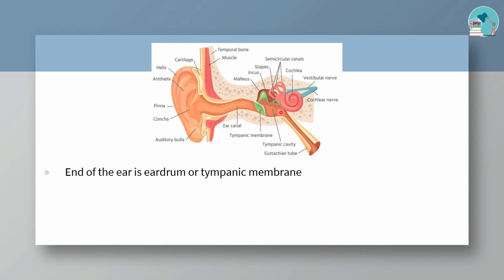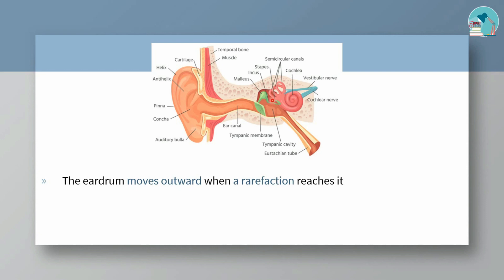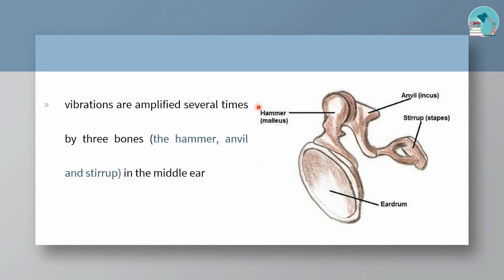If you look at the ear drum, it is the tympanic membrane. The sound compression wave causes the ear drum to vibrate back and forth. This vibration is passed to the middle ear. The three bones of the middle ear amplify the vibration.